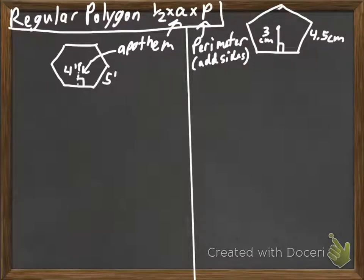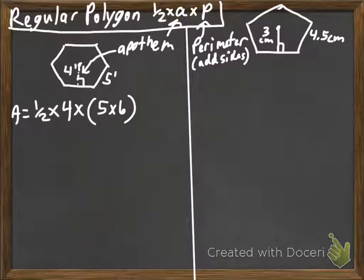So, let's start. So, our area is one half times the apothem. On the left here, the apothem is 4 times the perimeter. Now, we could add 5, 6 times, or there's the faster way, which is, since it's a regular polygon, all these sides are equal. That's what it means to be regular. It means that all the sides are equal, congruent. So, we could just take 5 multiplied by 6 to also find the perimeter. We put this in the calculator, and we figure out that it is 60 feet squared.